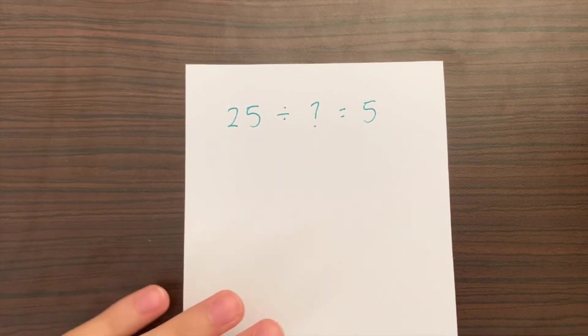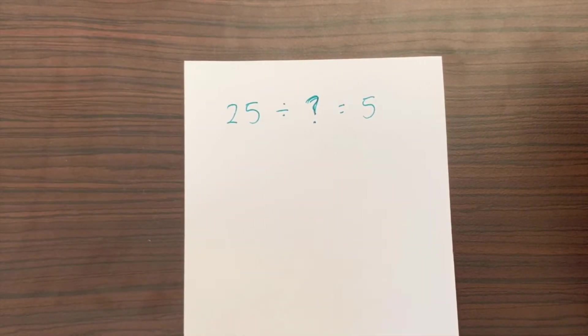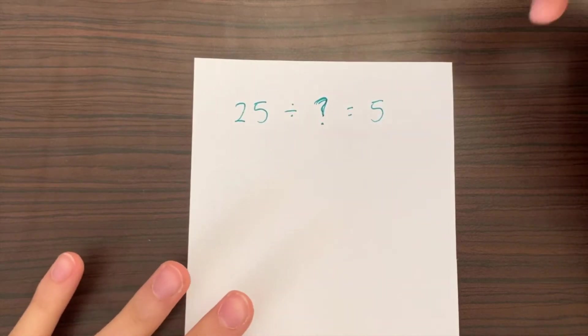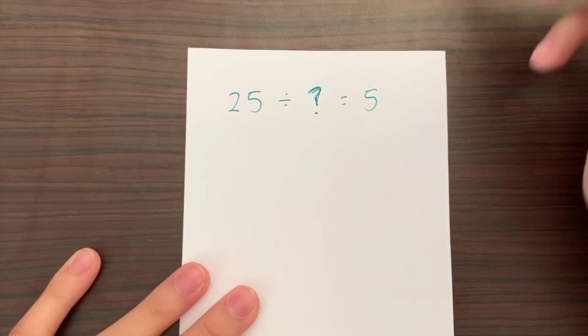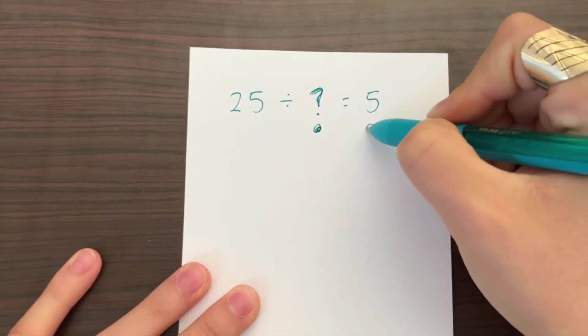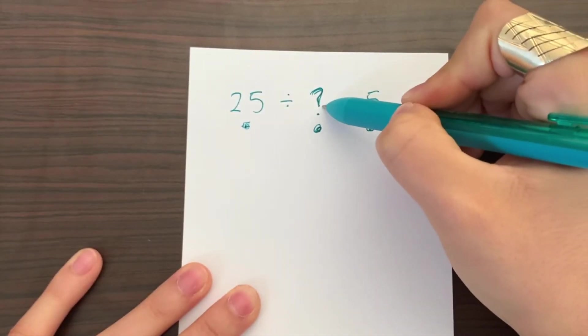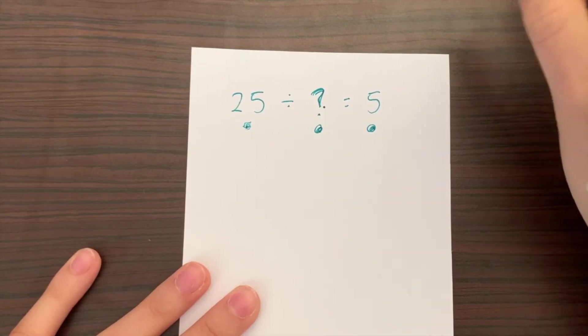So here we have our second problem. Now we have to find what do we have to divide 25 by to get 5. So again, you can multiply this number and multiply this number to get this number. So we have to find this number, but instead of using division we are going to use multiplication.